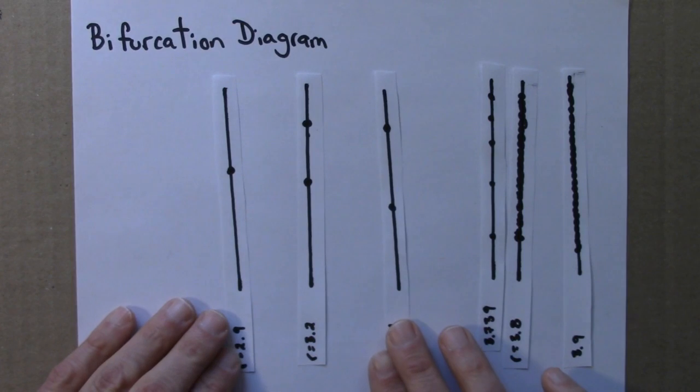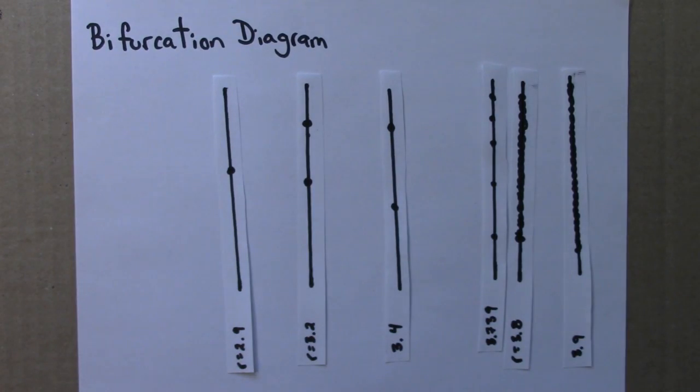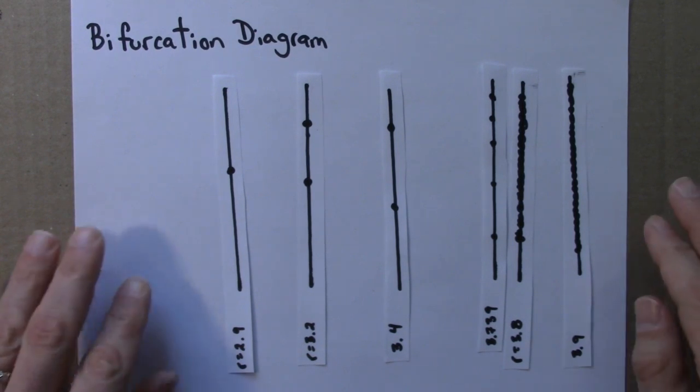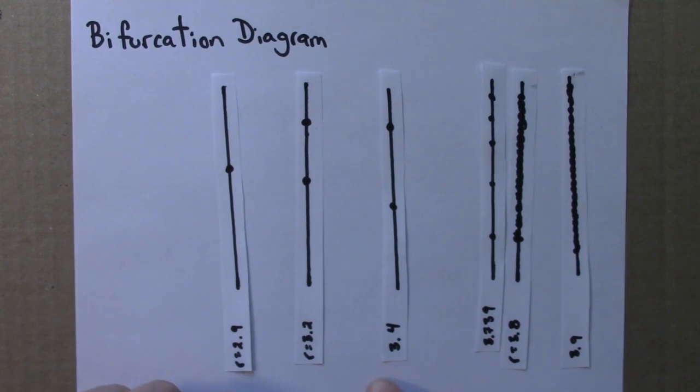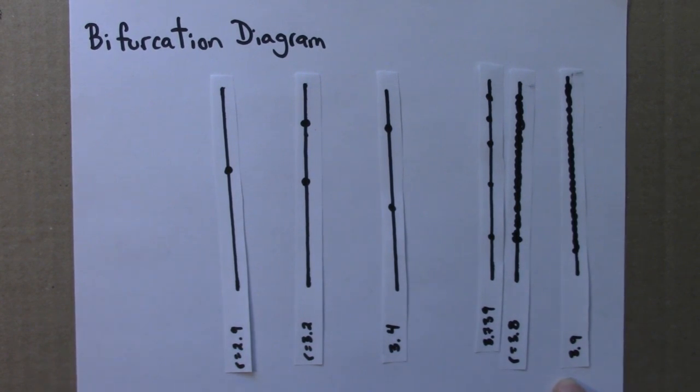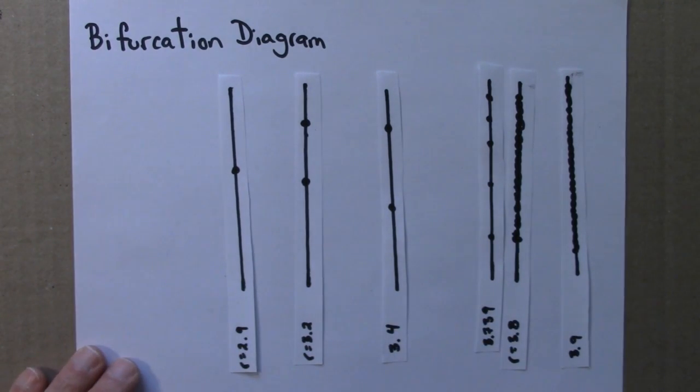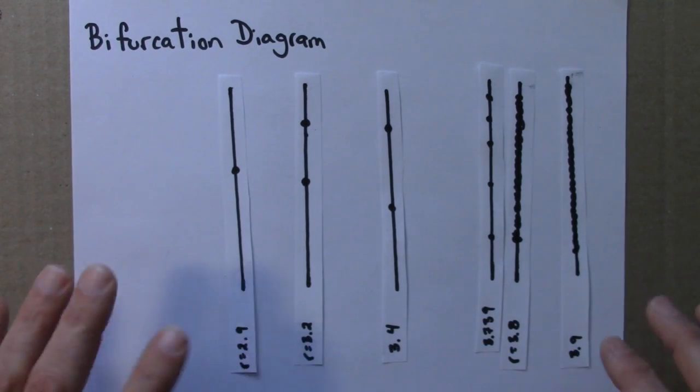So this is the beginnings of a bifurcation diagram for the logistic equation. Remember, the goal of a bifurcation diagram is to see how the dynamical system's behavior changes as a parameter, in this case R, has changed. So it gives us a global view of the range of behaviors that a dynamical system can exhibit. In this case, with just these six final state diagrams, it's not really clear quite yet what the overall pattern might be.